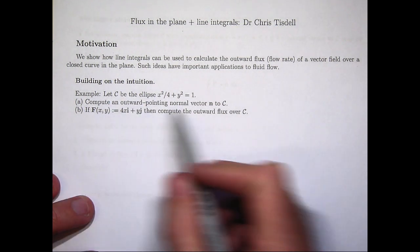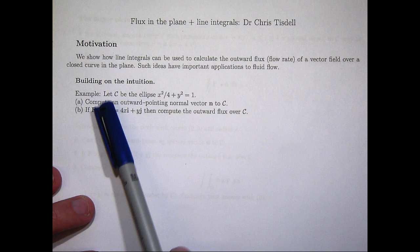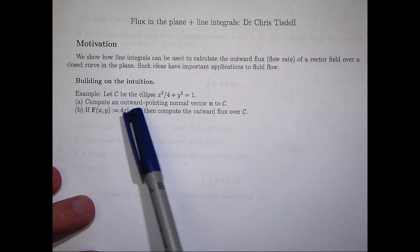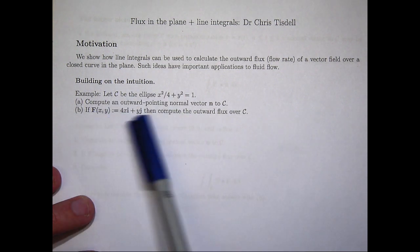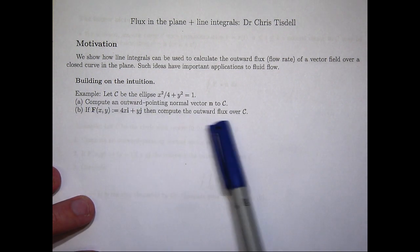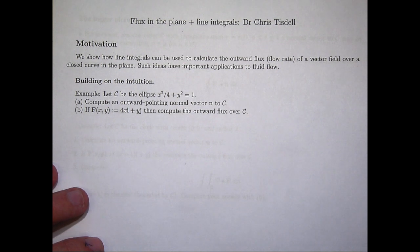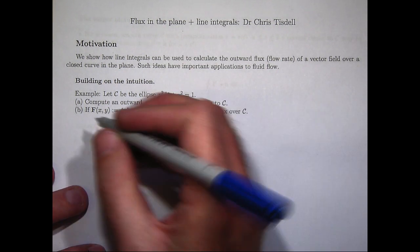So we are going to work through the following example. We have got an ellipse and we are asked to do two things. We are asked to compute an outward pointing normal vector n to the ellipse and we are also given a vector field and we are asked to compute the outward flux of the vector field over the closed curve.